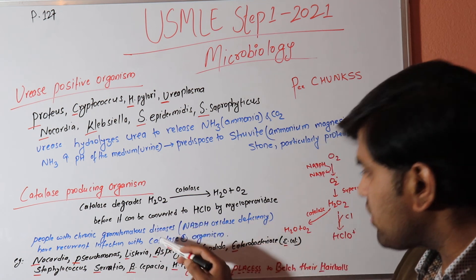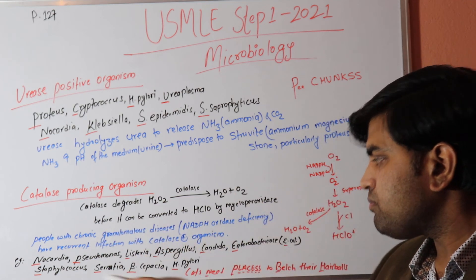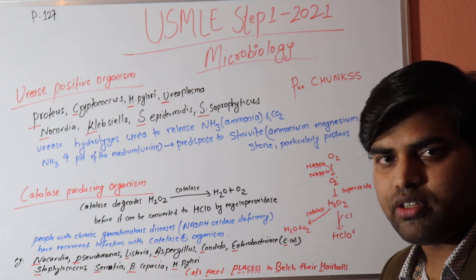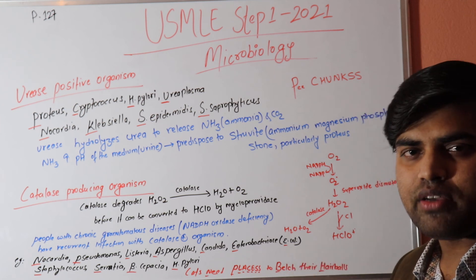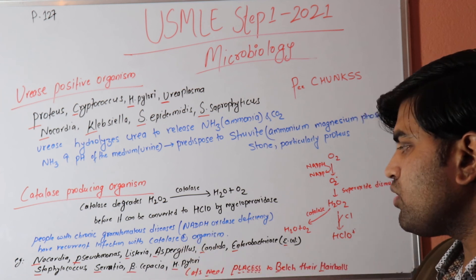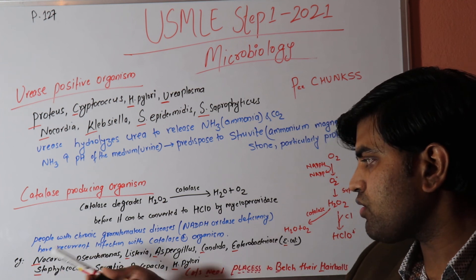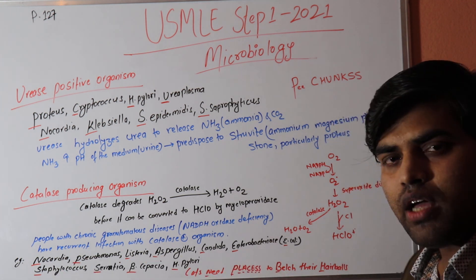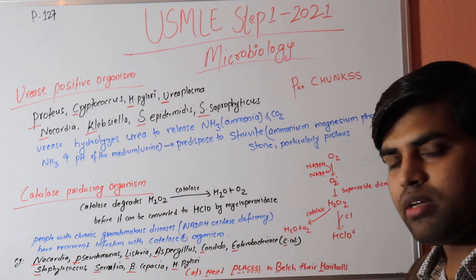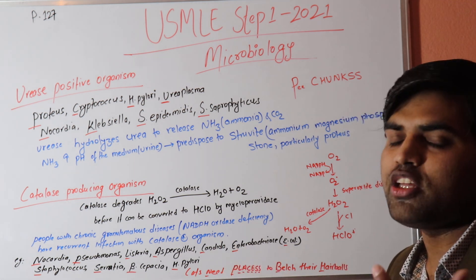Patients with NADPH oxidase deficiency — chronic granulomatous disease — will repeatedly develop infections with catalase-positive organisms. They come for treatment, go home, then return again with Nocardia, Listeria, Aspergillus, Staphylococcus, Candida, or Enterobacteriaceae infections. Staphylococcus and Nocardia infections are particularly common. The clinician must check NADPH oxidase levels to confirm chronic granulomatous disease.